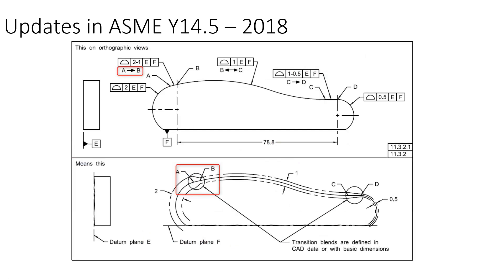The next modifier is the from-to modifier. A non-uniform tolerance with a from-to modifier may be indicated in the drawing to have a smooth transition from one point to another point. In this case, there is a non-uniform tolerance for this profile surface. We have added the from-to modifier, so from A to B the transition will be smooth with the tolerance transitioning from 2 to 1.